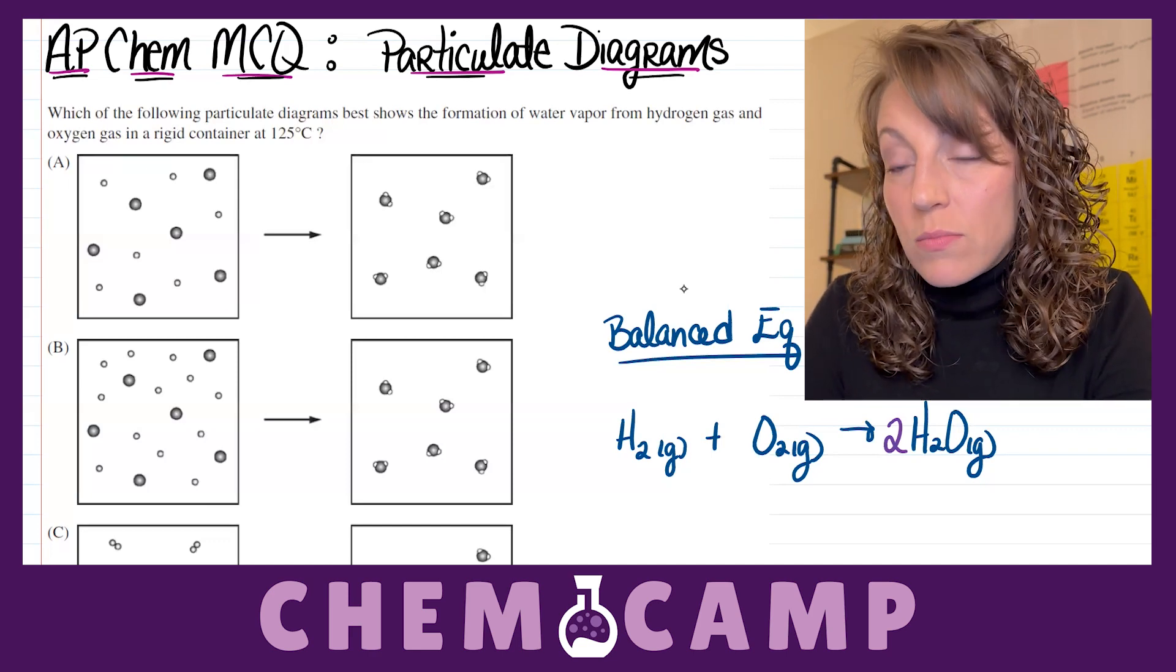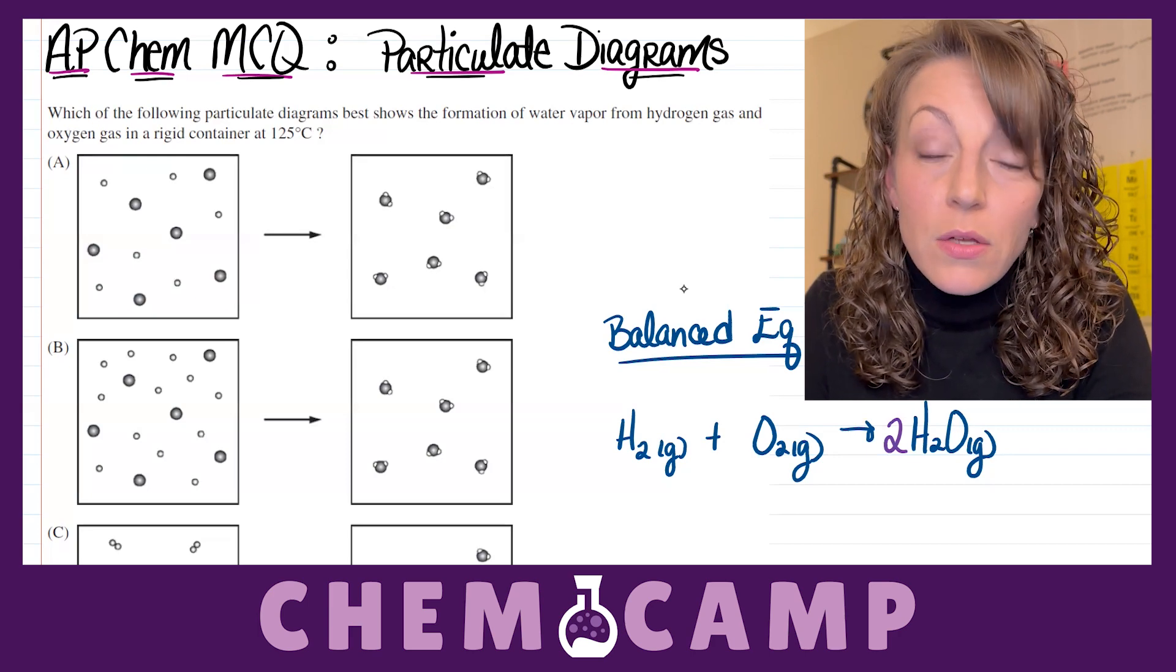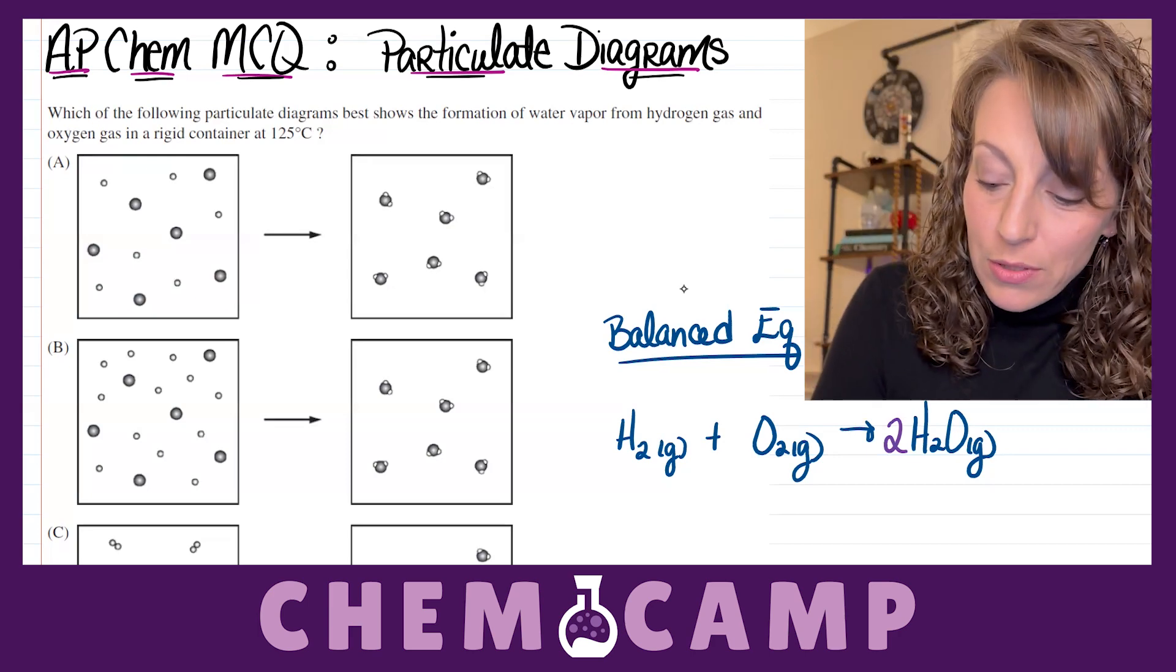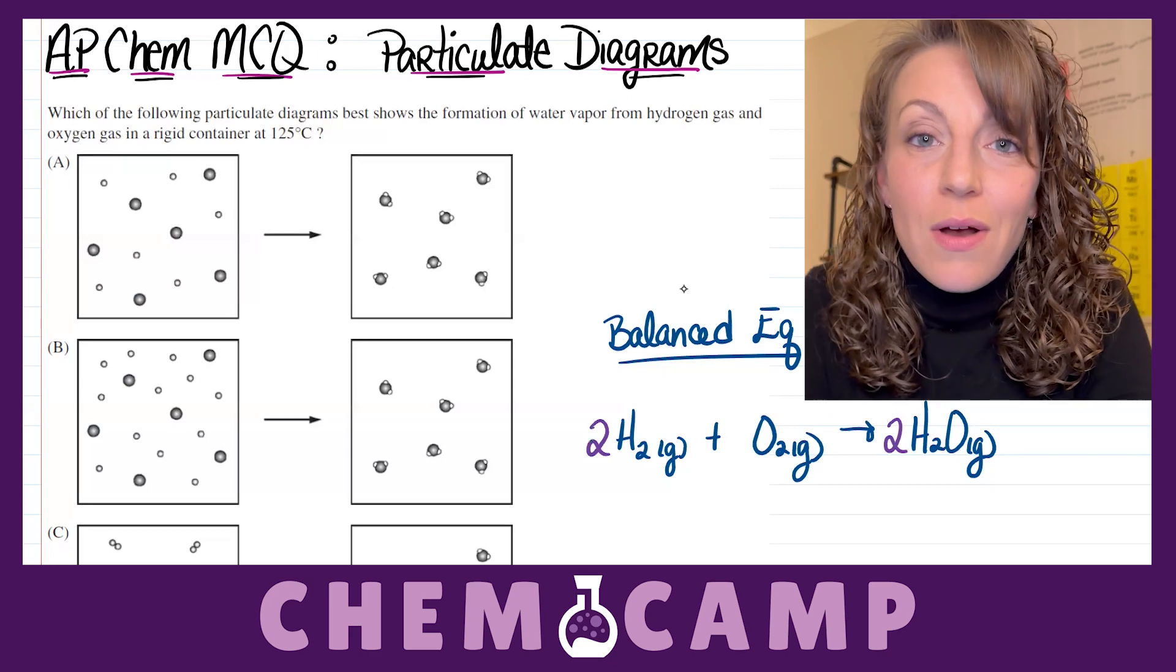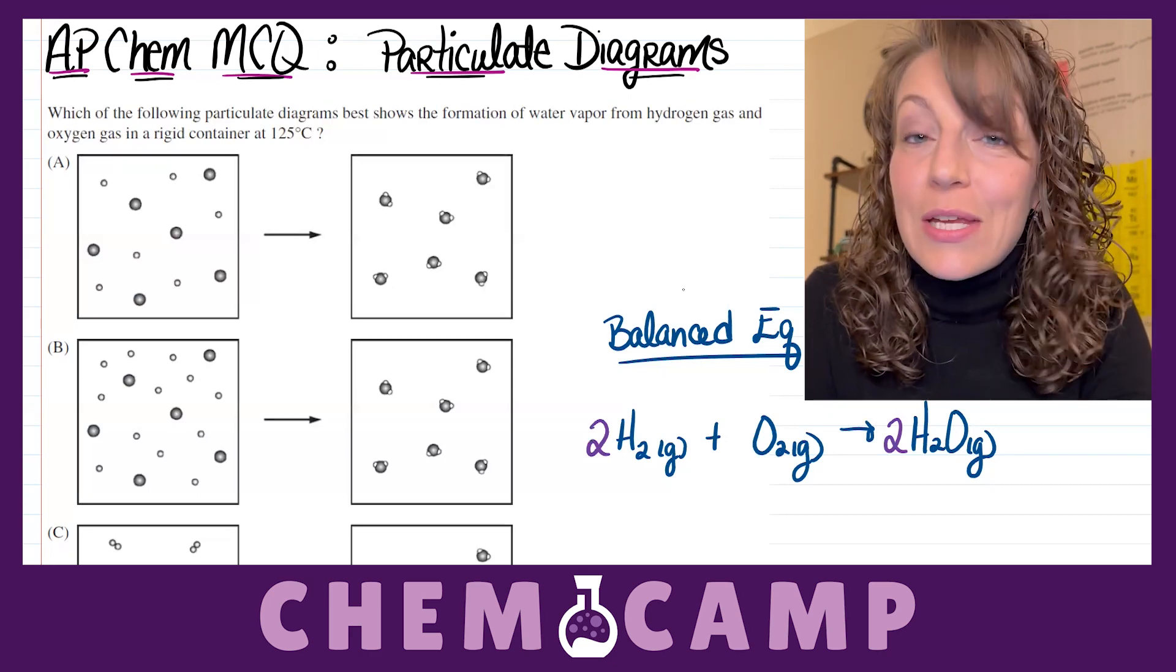But now we've got 2 times 2, which is 4 hydrogen atoms on the product side. So to balance this, I'm going to put a 2 in front of the H2 on the reactant side. And now I've got a balanced chemical equation.